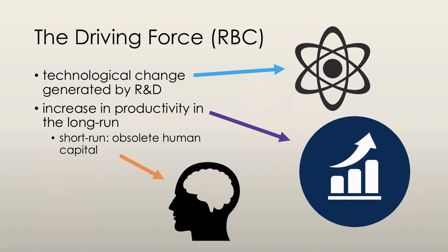In the long run, all technological change brings increases in productivity, but sometimes existing capital — for example human capital — can be made obsolete in the short run. People might lose their jobs because they have been replaced by machines. This could cause a temporary fall in production, as these people now do not have jobs, and thus there are fewer people working in the economy as a whole.